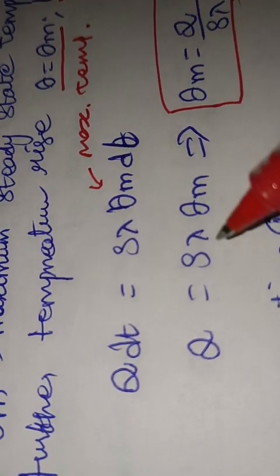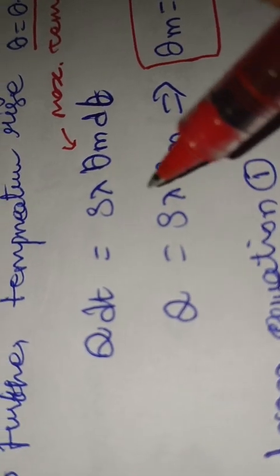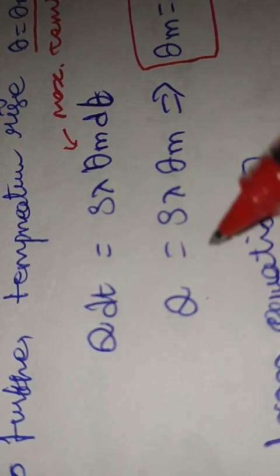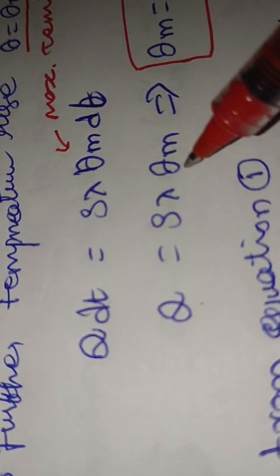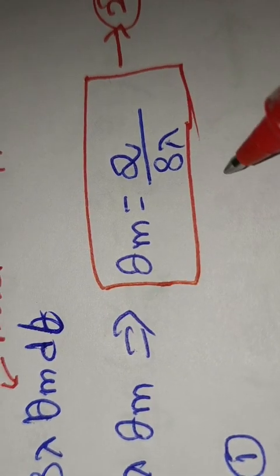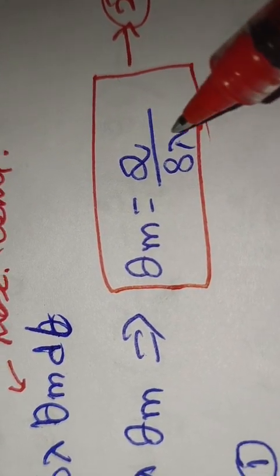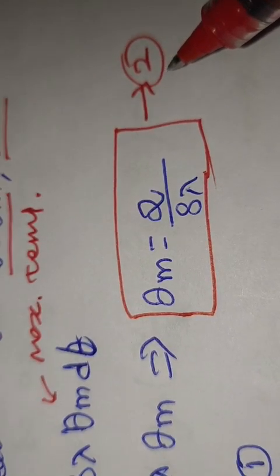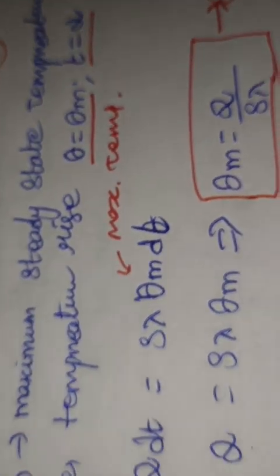From this equation we can easily find the maximum temperature rise. Since dt appears on both sides, we cancel it, giving Q = S·λ·theta_m. Therefore, the maximum steady-state temperature rise is: theta_m = Q / (S·λ). We label this as equation two.